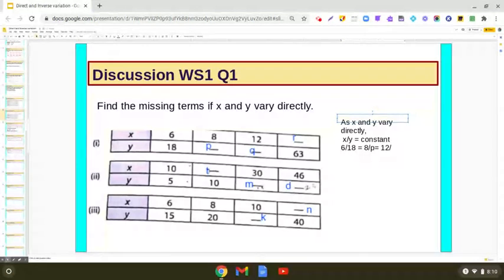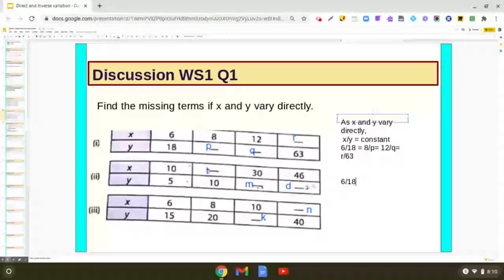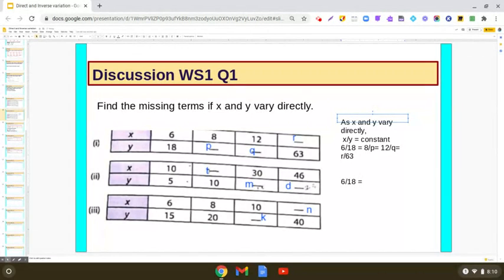We can write directly 12 upon q, which is equal to r upon 63. Now you can make equations out of this statement. So let us find p first. So we can write 6 upon 18 is equal to 8 upon p.